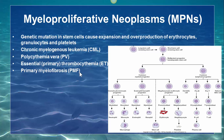Based on the WHO classification, four disorders are included in the group of myeloproliferative neoplasms: chronic myelogenous leukemia (CML), polycythemia vera (PV), essential or primary thrombocythemia (ET), and primary myelofibrosis (PMF). Make sure to remember the full names and the abbreviations.